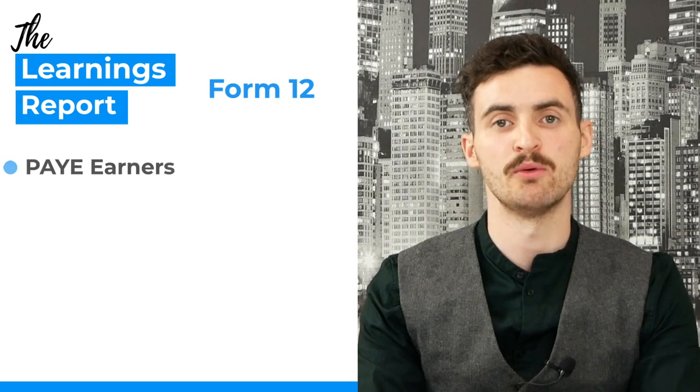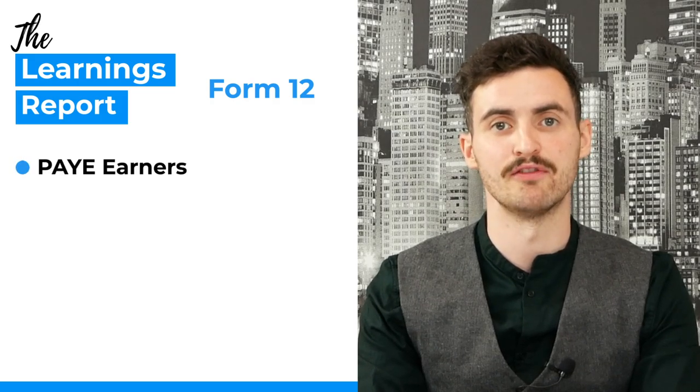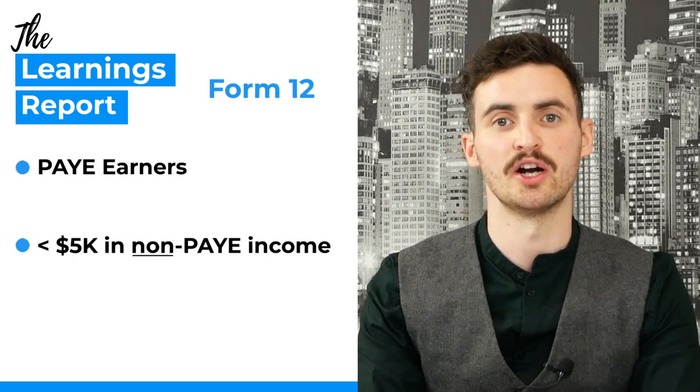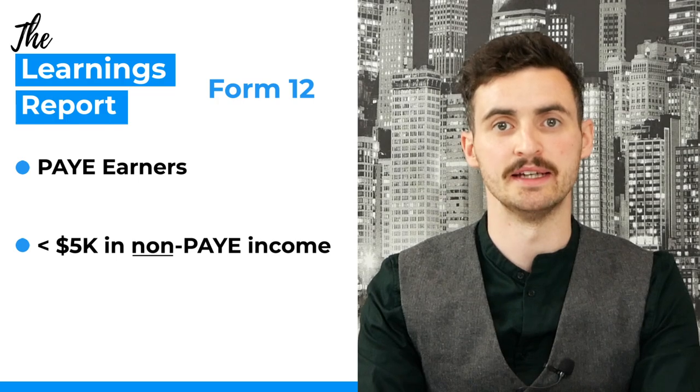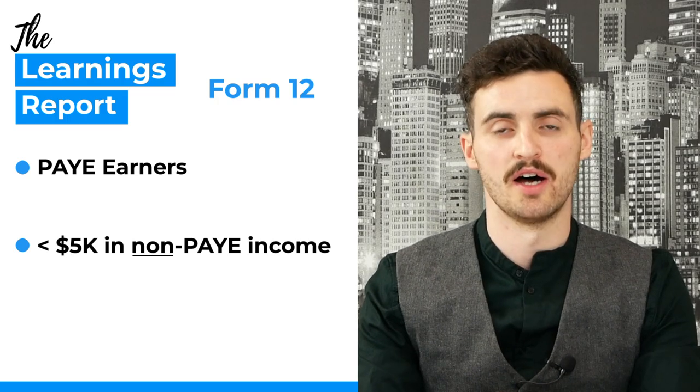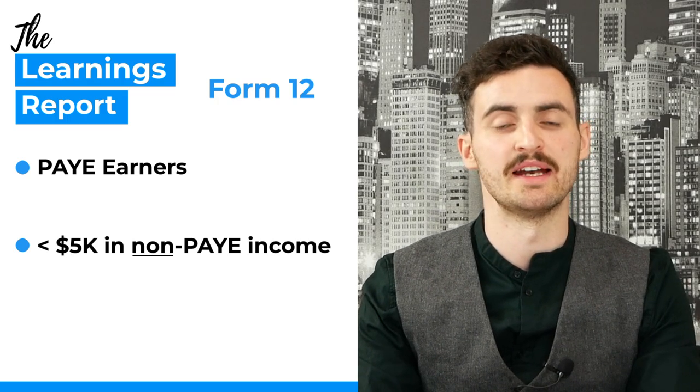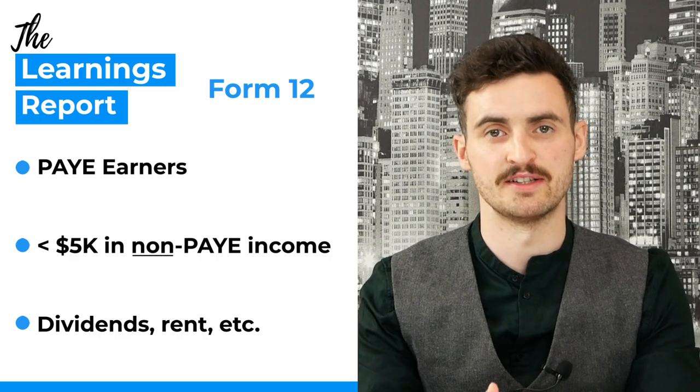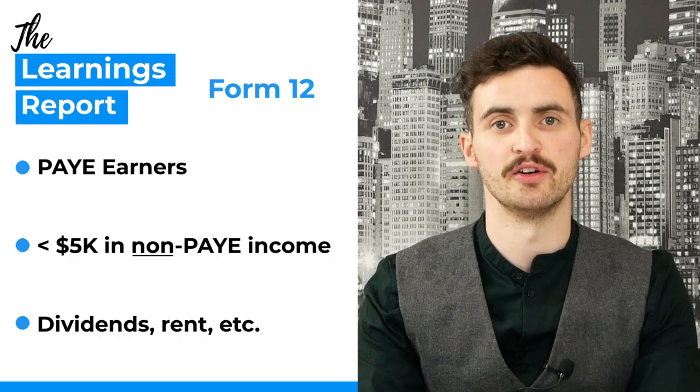If you have other forms of income to declare in addition to your capital gains — for example dividend payments, staking rewards from cryptocurrency, payments from a side hustle, or from renting your room on Airbnb — you'll likely also need to file a Form 12. The Form 12 is for PAYE earners who also have up to €5,000 in non-PAYE additional income, which could include dividends, Airbnb rental, side hustles, etc.